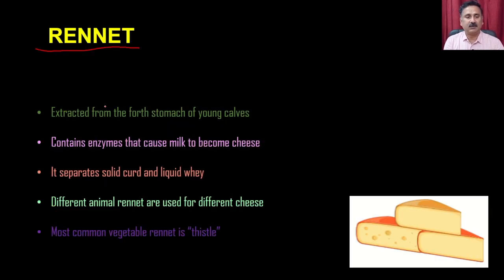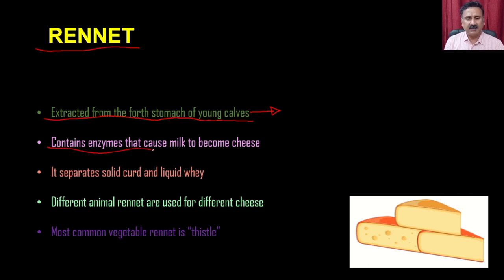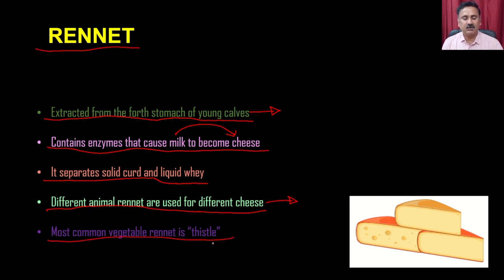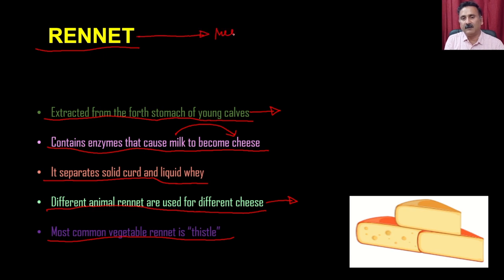In the dairy industry, starting from cow's milk and ending in dairy products like butter and cheese, there are four enzymes used: rennet, lactase, protease, and catalase. The first enzyme is rennet, extracted from the fourth stomach of young calves. It contains the enzyme that causes milk to become cheese. It separates the solid curd and the liquid whey. Different animal rennets are used for different types of cheese, and the most common vegetable rennet is thistle.